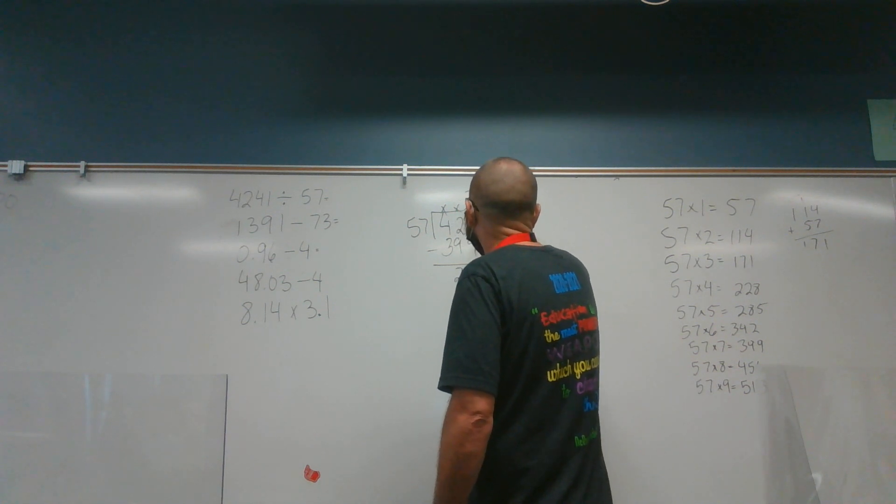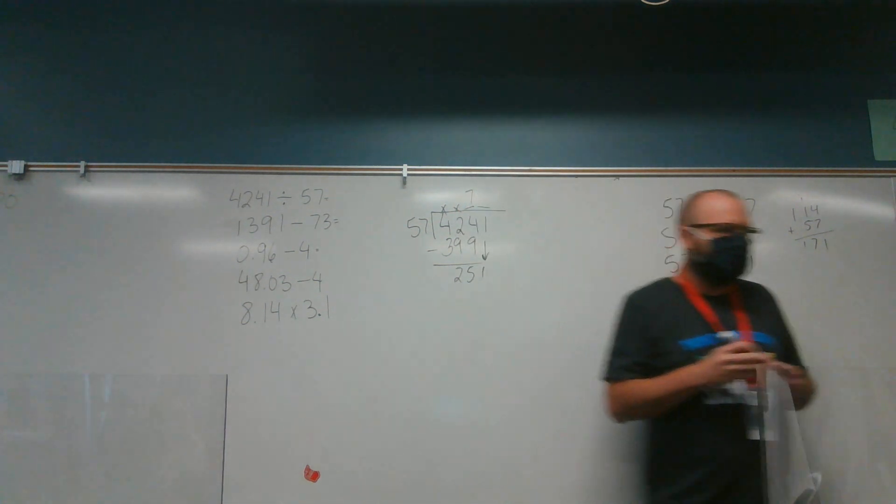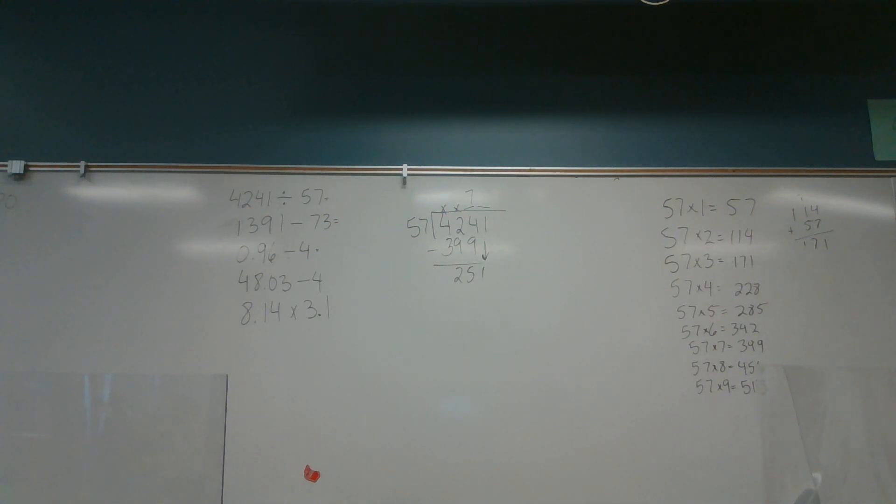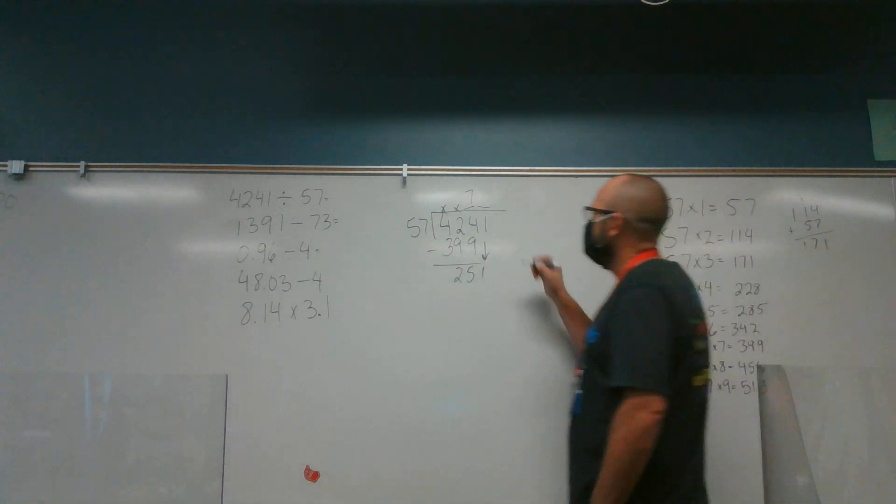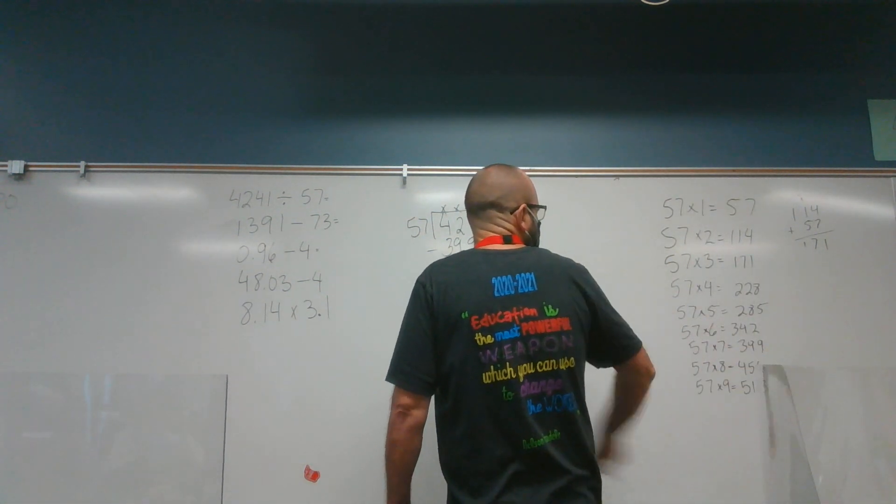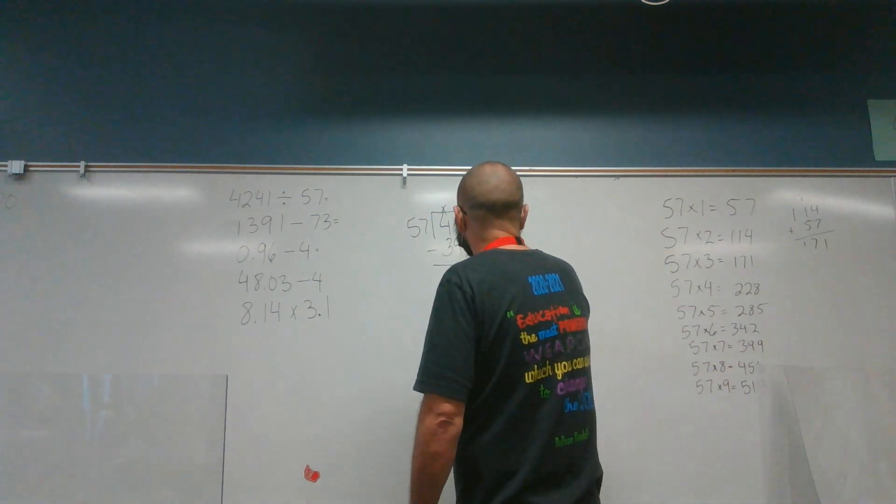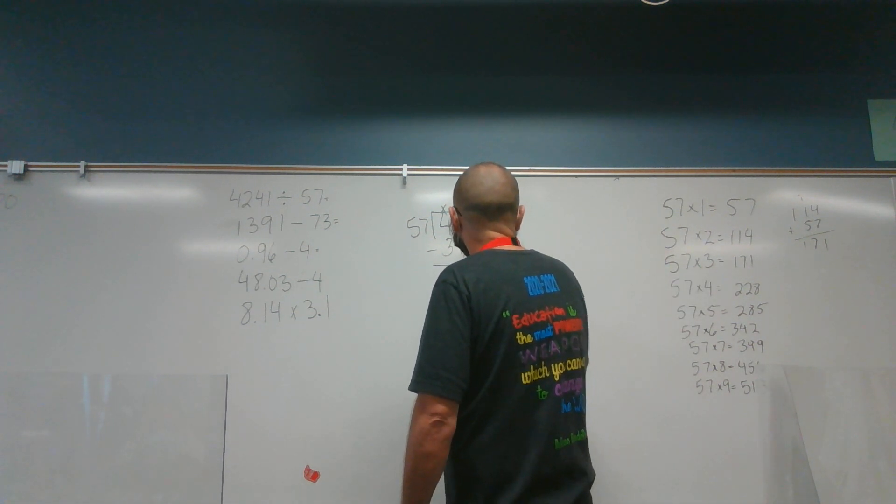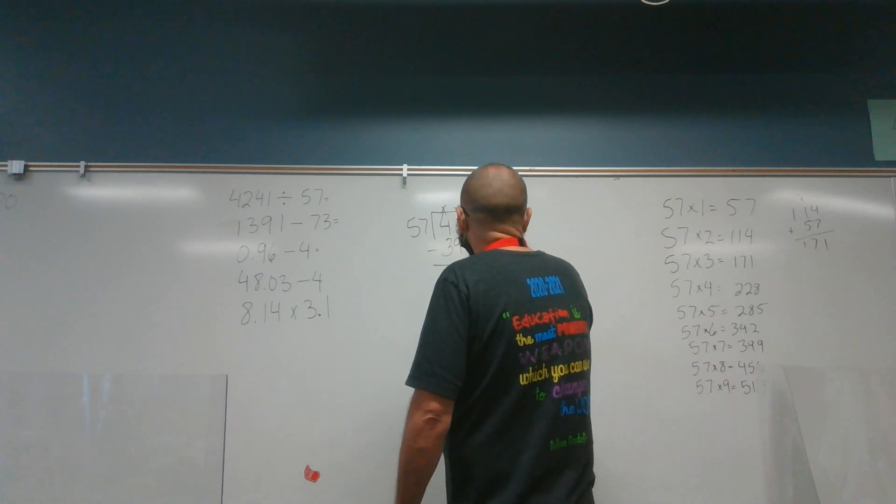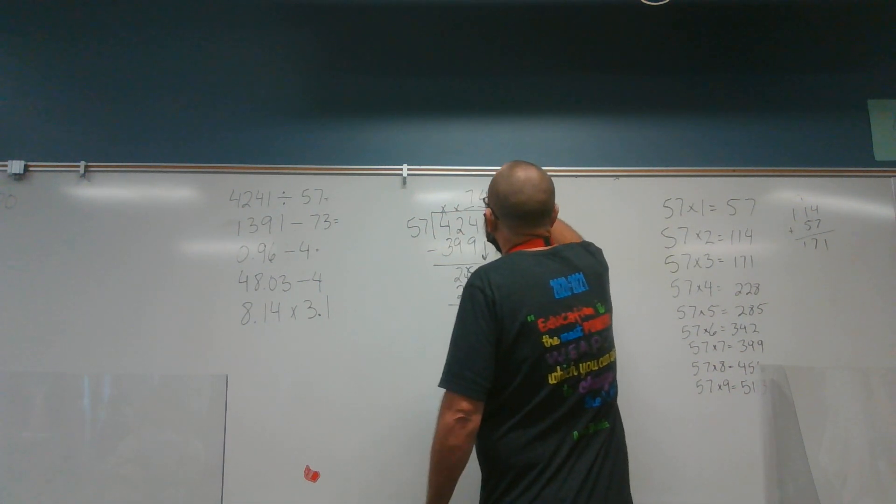Or 25, and then bring down the one. It's 25, then we bring down the one. The next number goes over the one because that's what we brought down. Then I have to get as close to 251 as I can get without going over, and it looks like it's 228 because 285 is too big. So it must be 57 times 4. 57 times 4, we already said, is 228. And it should be 74 remainder 23.